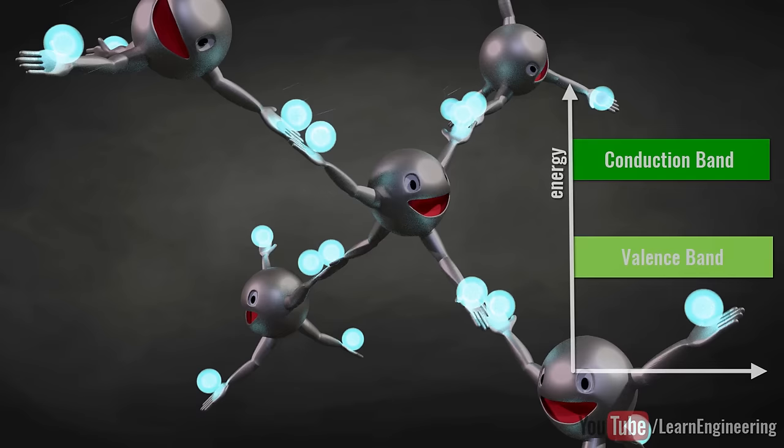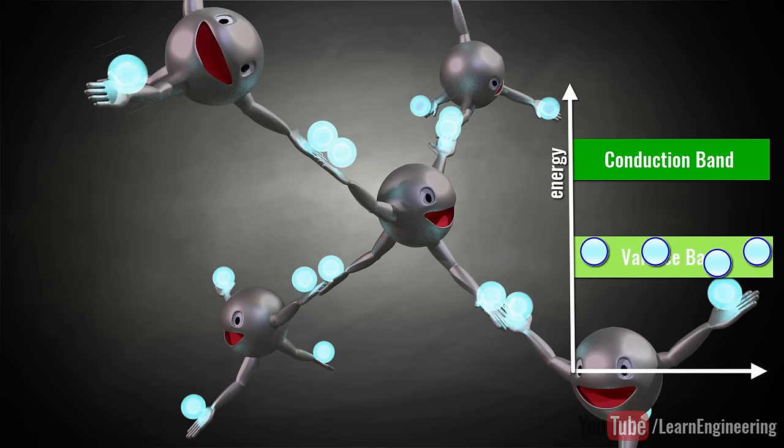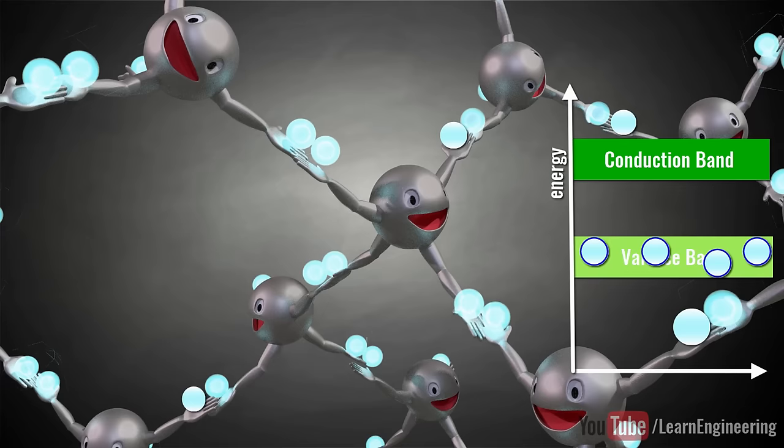Currently, the electrons are in their valence band. If the pure silicon has to conduct electricity, the electrons have to absorb some energy and become free electrons. Thus, the pure silicon will have a low electrical conductivity.